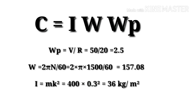For angular velocity ω, the formula is 2πN/60. Substituting N = 1500 rpm gives ω = 157.08 rad/s.